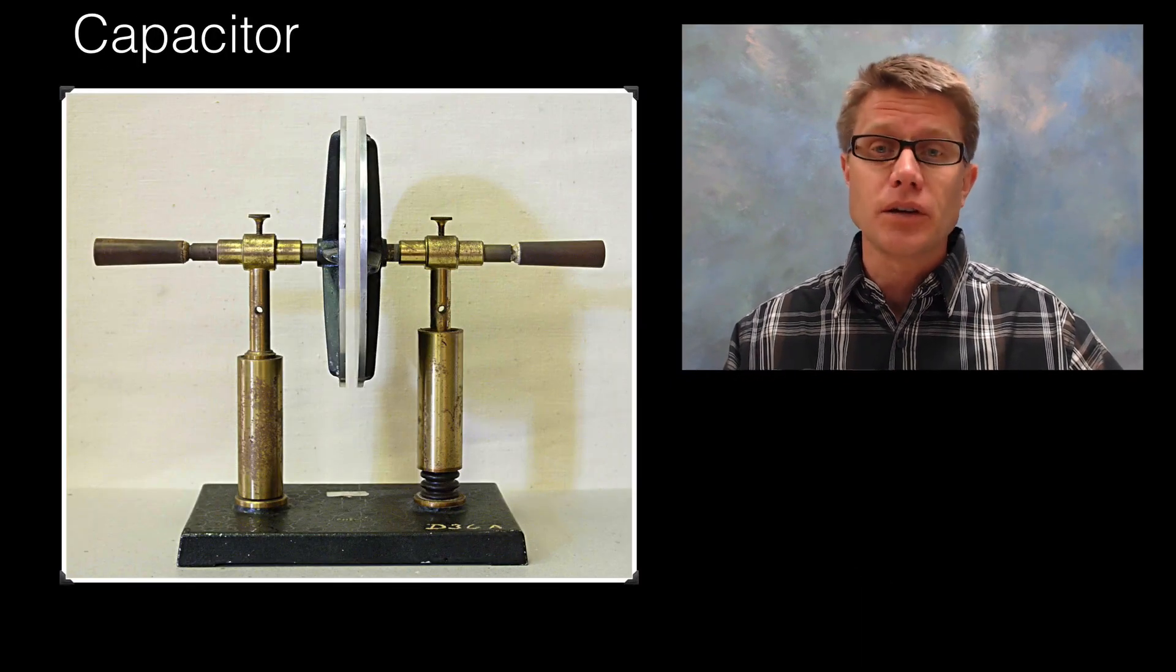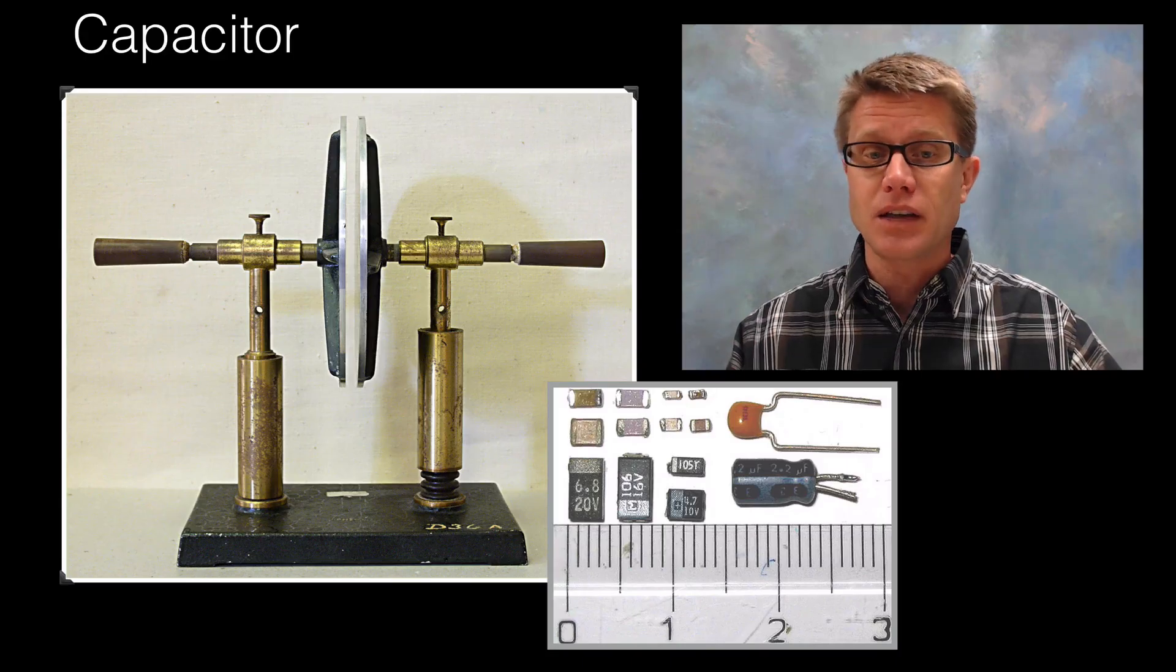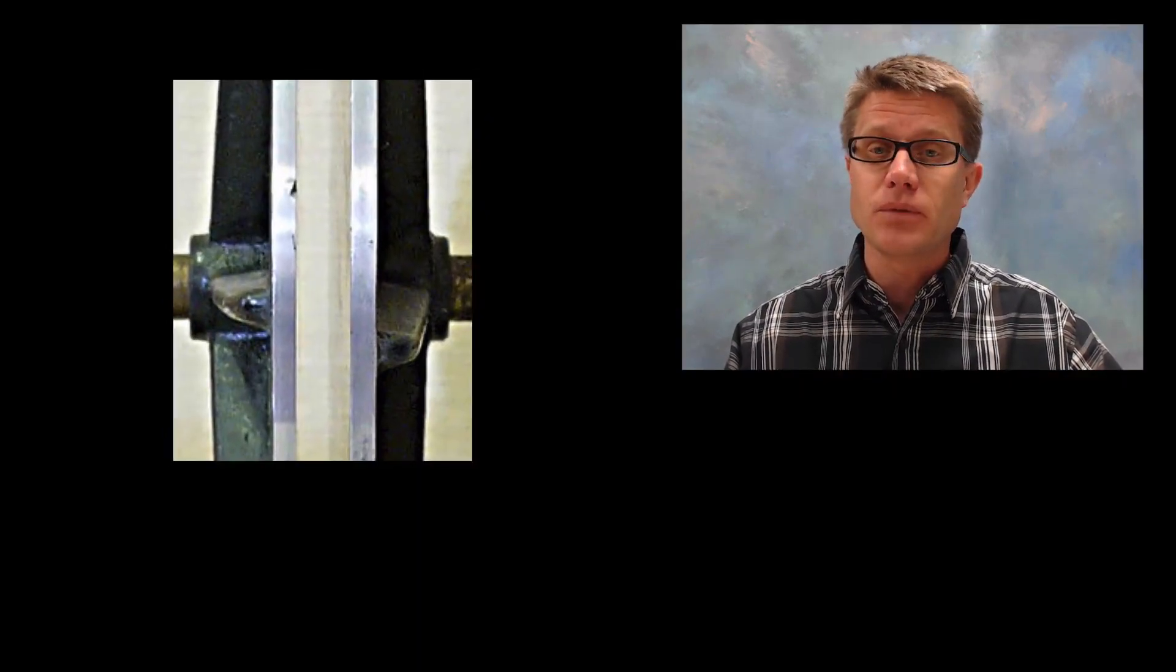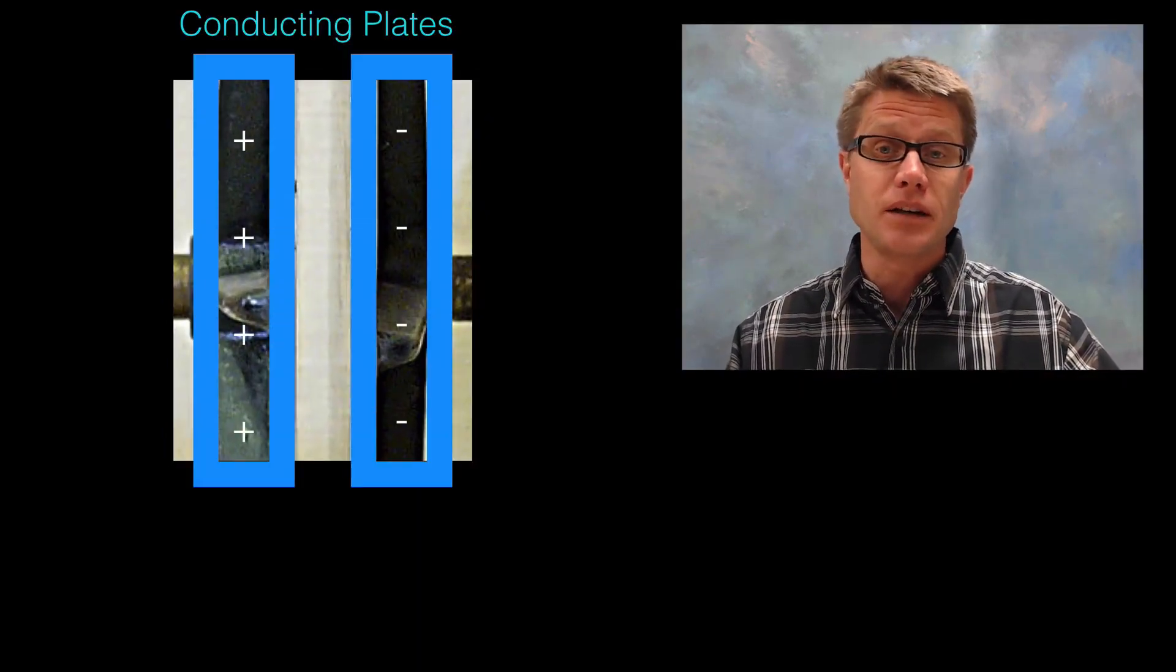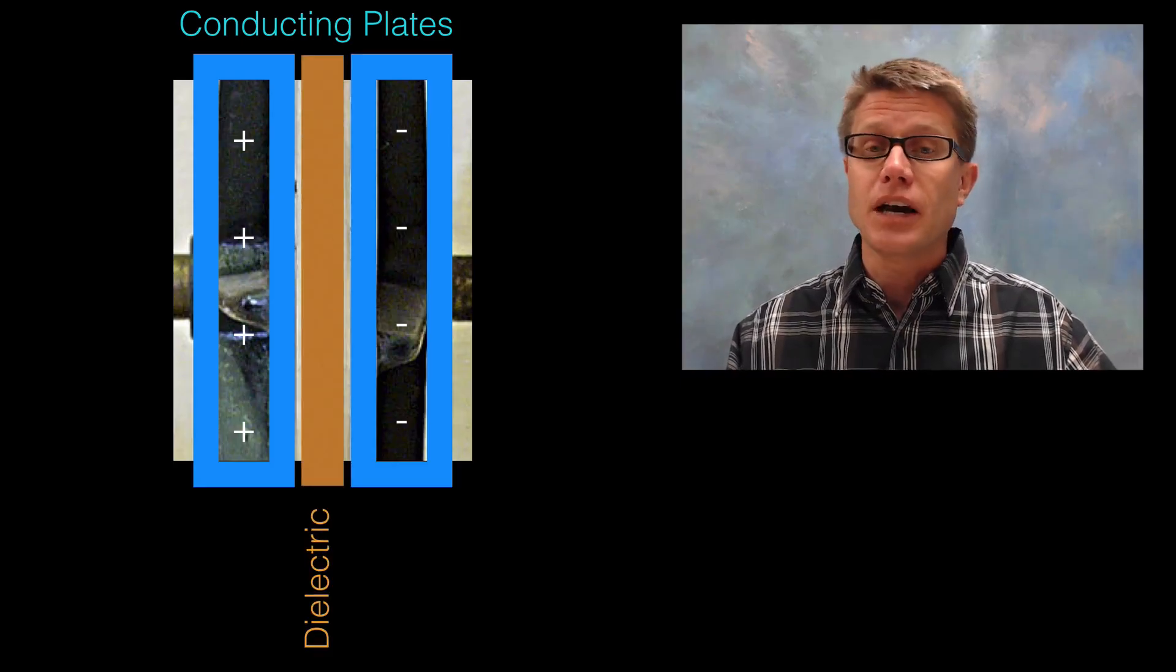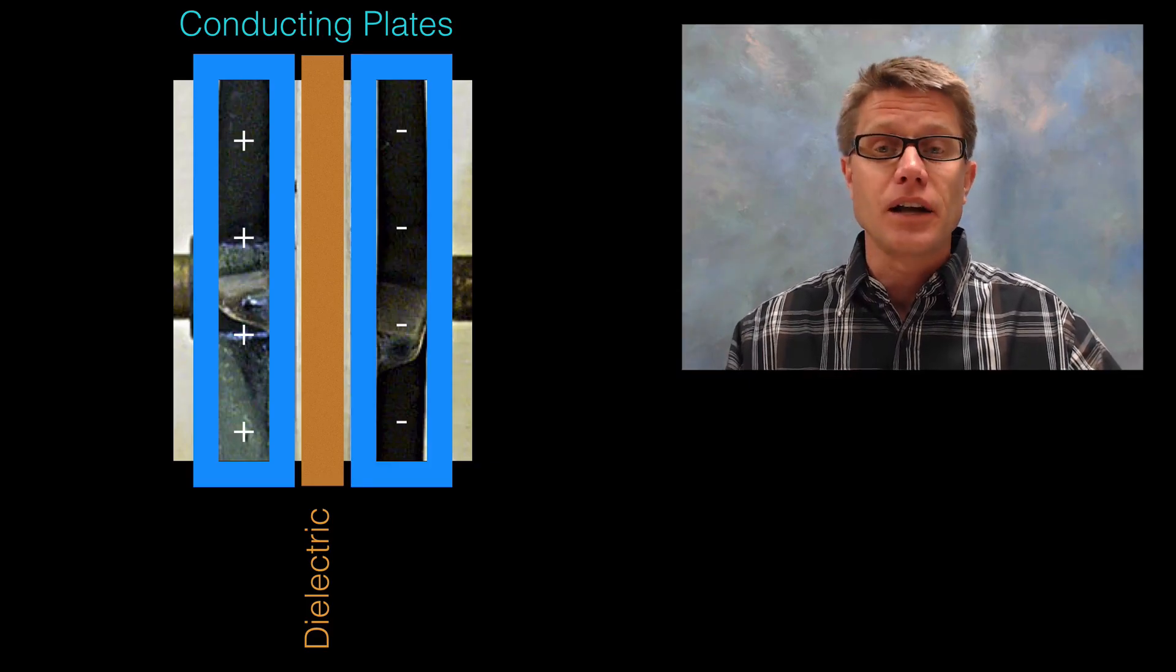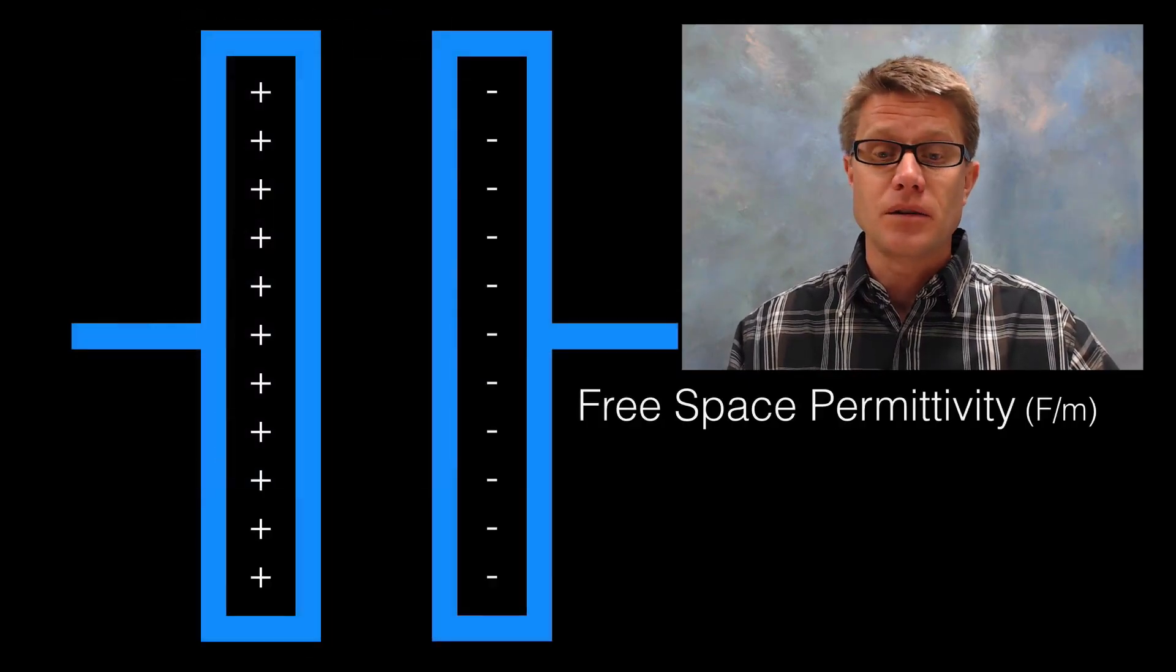Let's look at a real basic capacitor. This is what they look like today. If we zoom in like this, you have two conducting plates on either side connected with wires. Then in the middle we have a dielectric, which is an insulator. That's something that can resist that electric field forming in that capacitor.